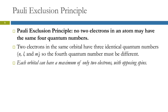The Pauli Exclusion Principle says no two electrons in an atom can have the same four quantum numbers. In a given orbital, the principal quantum number n, l, and m_sub_l are all the same, so the fourth quantum number — spin — has to be different. Think of these four quantum numbers like a social security number: each electron has its own unique set. Therefore, each orbital can hold only two electrons, and they must have opposite spins — one plus one-half and one minus one-half.